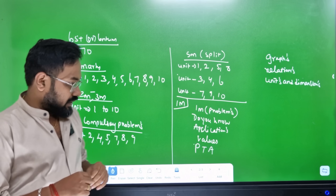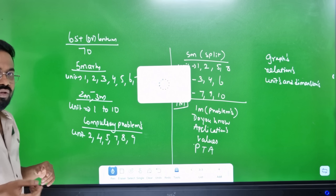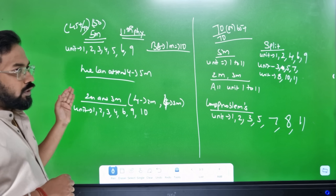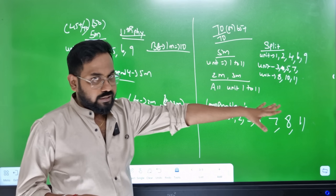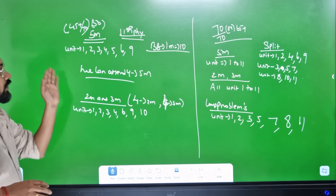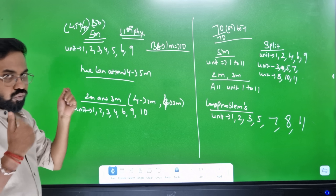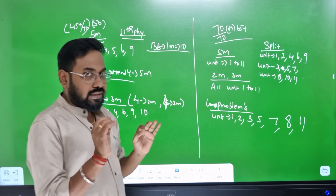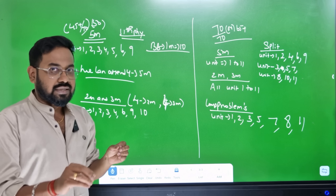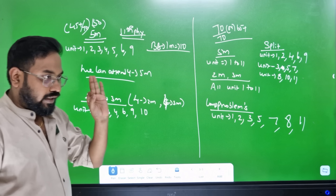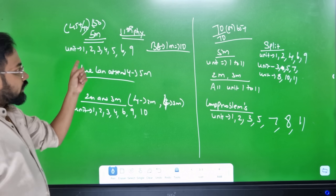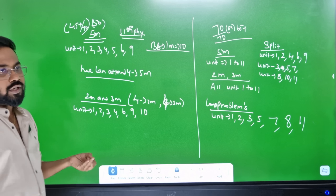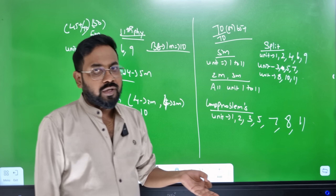You can score 1 mark in physics by adding 1 mark at a time. For 11th physics, the target is 50 or 45 plus 70, meaning 65 plus 70. We need to cover units 1, 2, 3, 4, and 5 for 5-mark questions. If you've added 5 marks from one unit, 90% of the 5-mark questions come from the first volume. In the 7th and 8th units, there is additional content to cover.